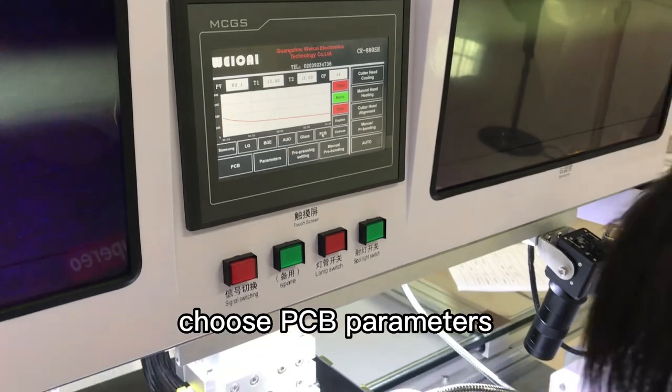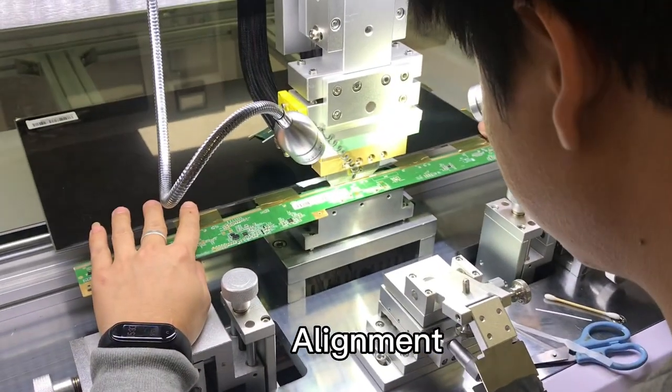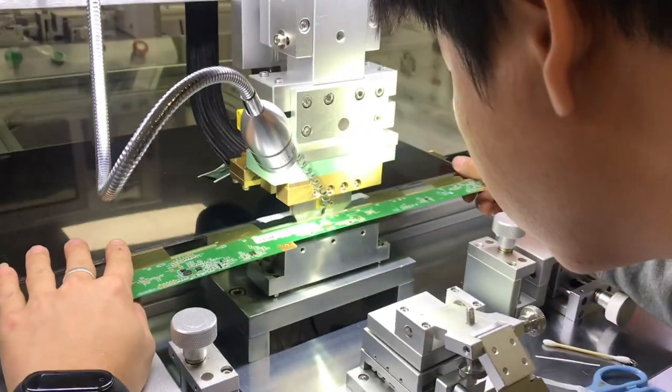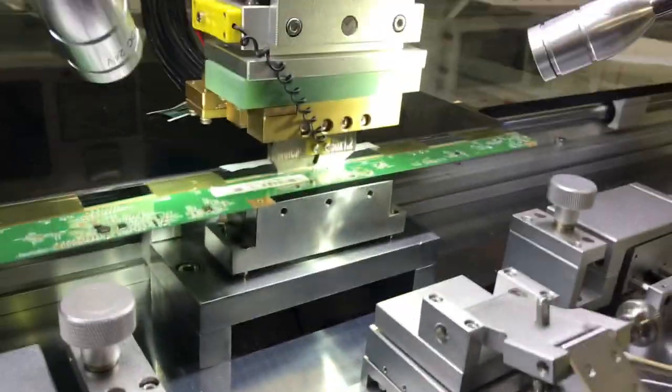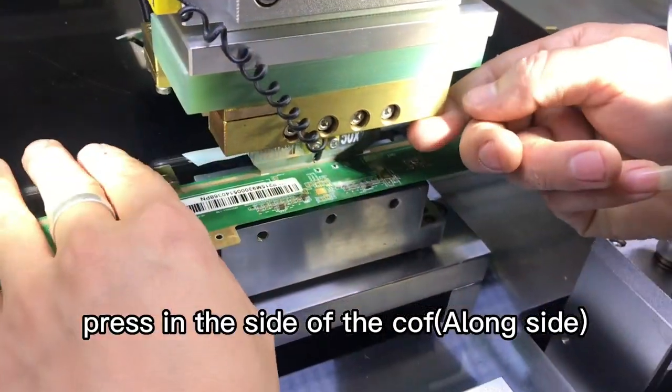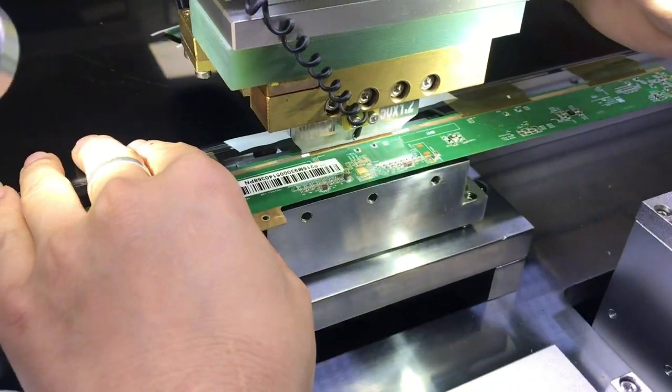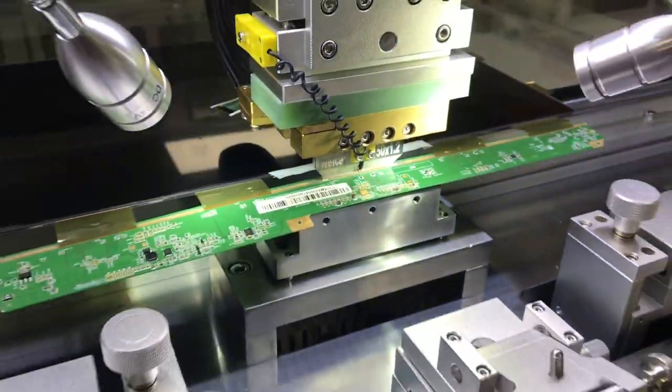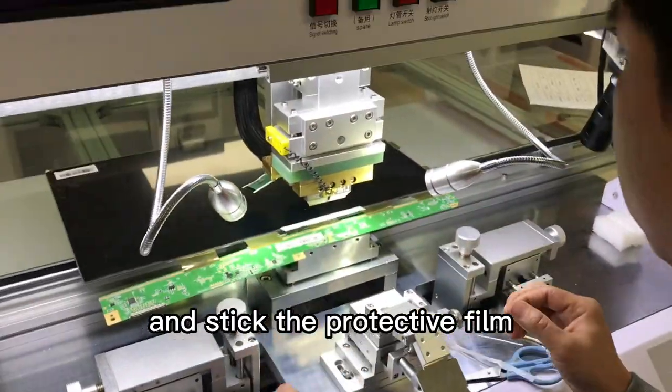Choose PCB parameters. It's the PCB. Press the pin. Press the pin. Press the pin and see the pin.